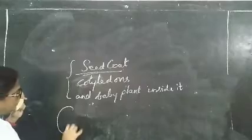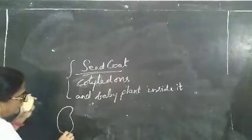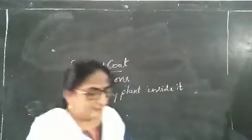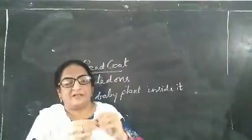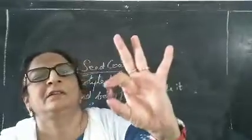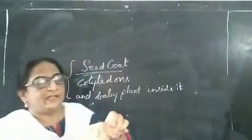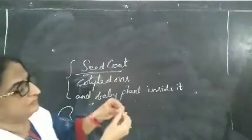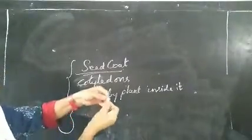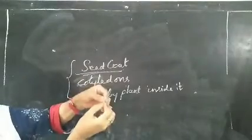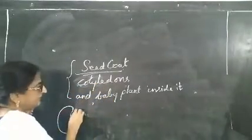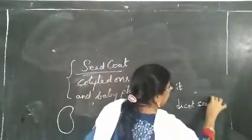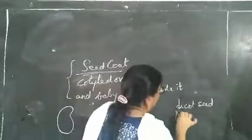I will show you a seed split into two parts. This is a kidney bean seed — you see this one, it is also called a rajma seed. See, this seed will split into two. If a seed splits into two like this, it is said to be a dicot seed. And a single seed like rice or wheat is a monocot seed.